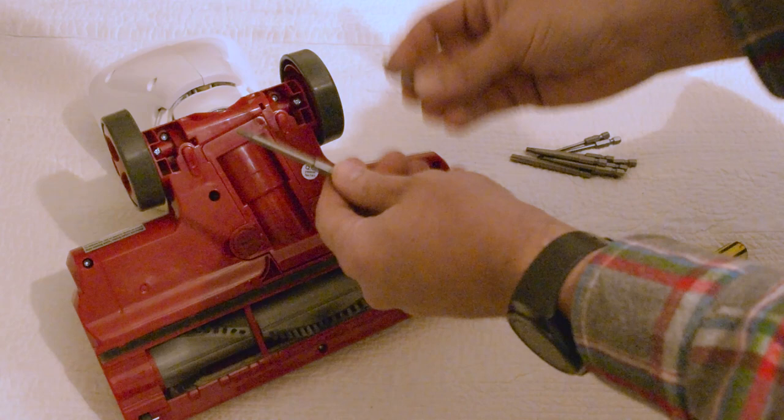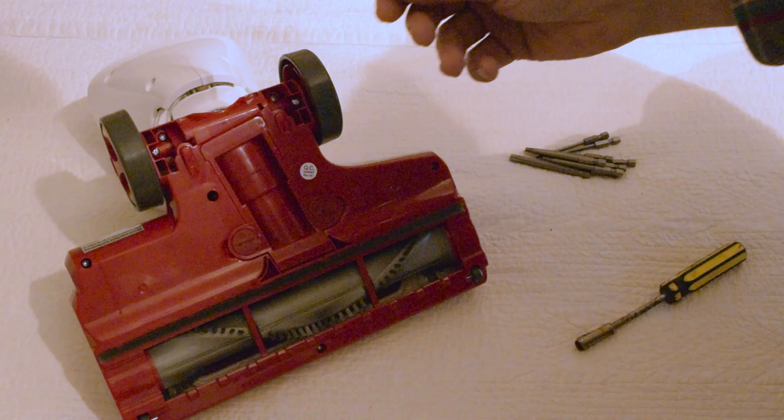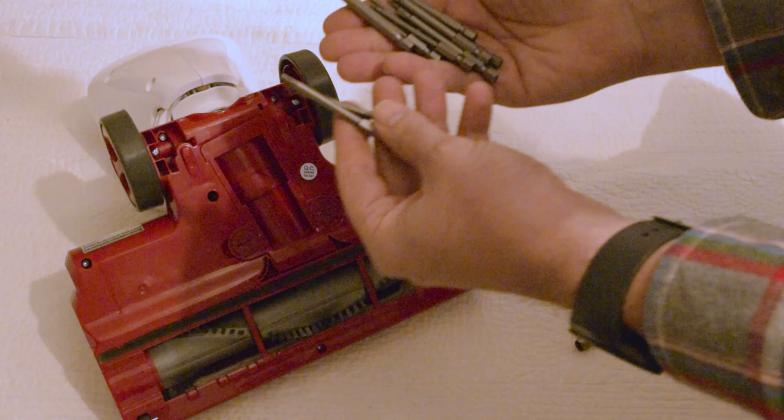I open up a lot of different Sharks and for example this Shark Rotator NV500 is using a T20 size and a Navigator I just worked on, NV355, is using a T15 size. I'm sure that there are other sizes that different Sharks use so I recommend buying the set. It's really not that much, we're talking ten to twenty dollars for the whole thing.